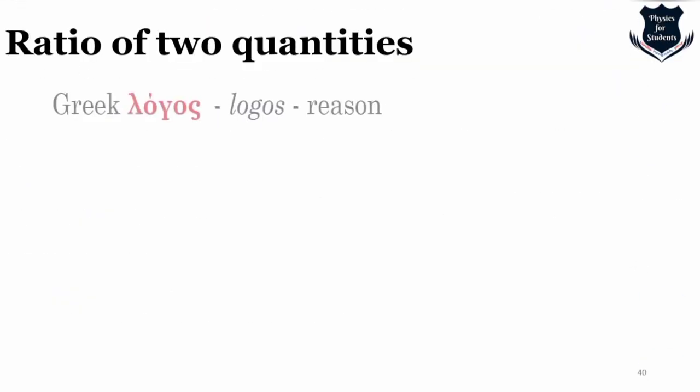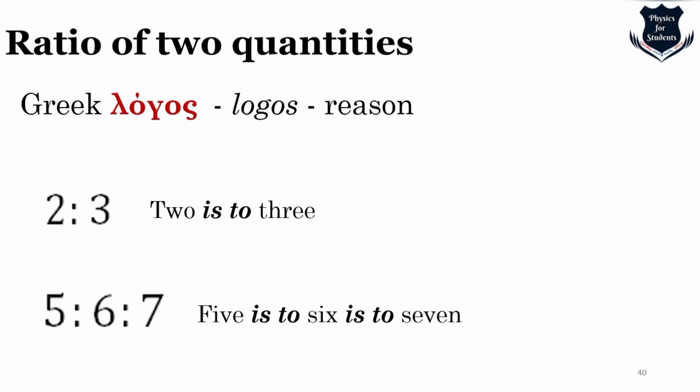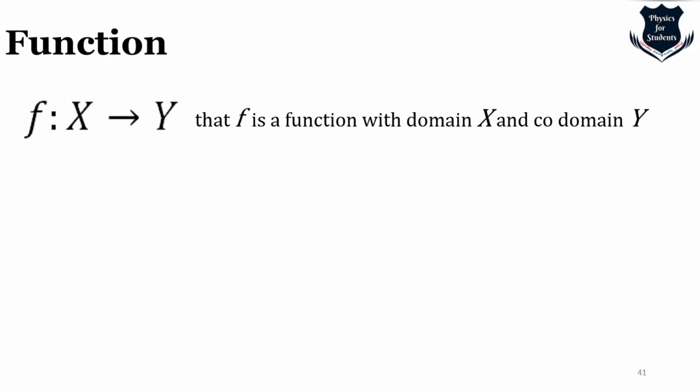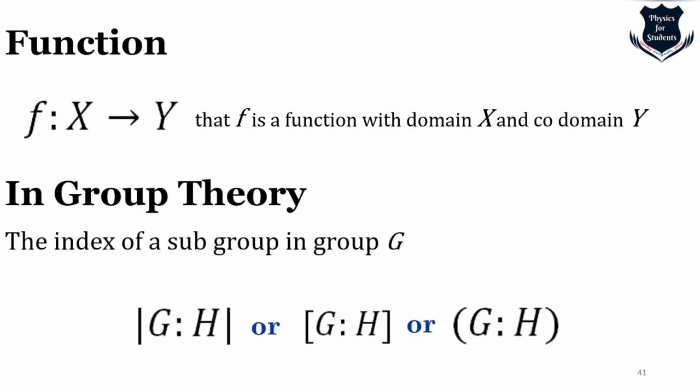The colon is used in mathematics to denote the ratio of two quantities — the word ratio comes from the Greek word logos meaning reason. It is also used in function notation (f: X → Y, meaning an assignment of an element of Y to each element of X), in group theory as an index of a subgroup (G : H), and in set-builder notation where x : x > 0 means 'the set of all x such that x is greater than zero.'